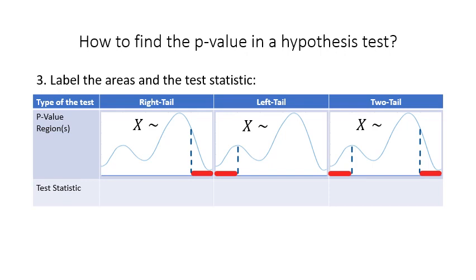In the right-tailed test, we place the test statistic on the right side of the region, and the area to the right of the test statistic is labeled as p — this is the p-value. In a left-tailed procedure, we place the test statistic on the left side and label the area to the left as p — this is the p-value. In a two-tailed procedure, the total area of the region equals p, so the area of each tail equals half of p.